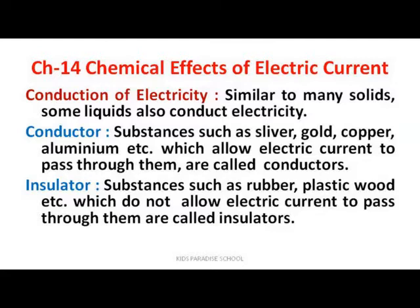Substances that allow electric current to pass through them are said to be conductors, and those that do not allow electric current to pass through them are called insulators. Conductors include metals like silver, gold, copper, and aluminium. Insulators include rubber, plastic, and wood.